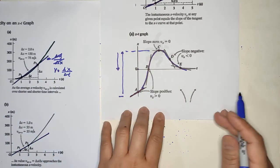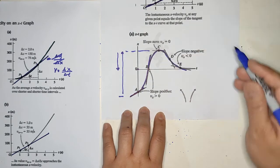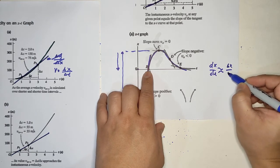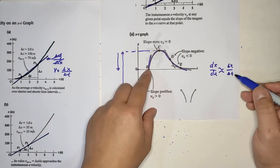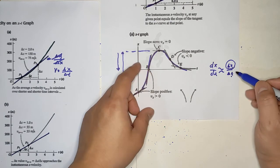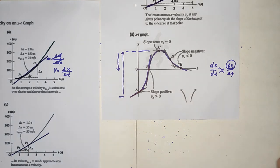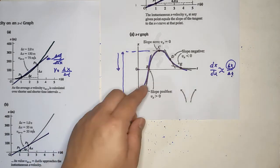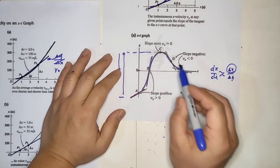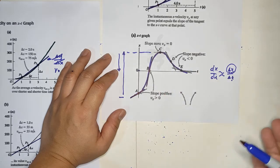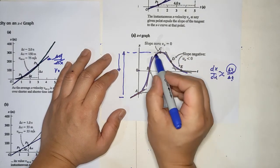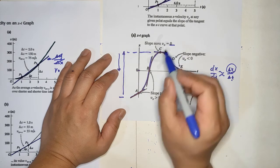At point A the slope is positive, meaning the particle is going in the positive direction. You have dx/dt and delta x over delta t — if the slope is big, it means there is a large change in displacement and the instantaneous velocity is large. At point C the slope is horizontal, meaning the slope is zero and the instantaneous velocity is zero.